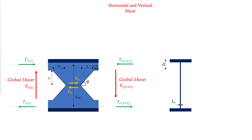As in all flexural members, horizontal and vertical shear forces are resisted by the web of castellated and cellular beams. In open-web beams, shear becomes more critical for two reasons. First, the vertical shear must be resisted by the net section of the member. Second, horizontal shear that passes down the midline of the beam web becomes magnified at each web post due to the adjacent web openings.